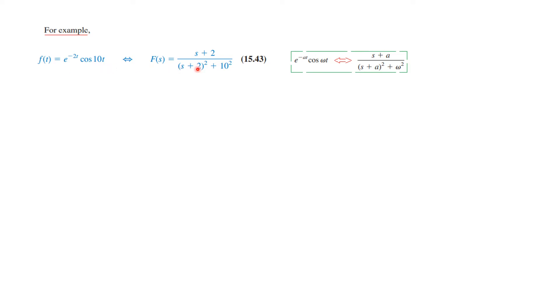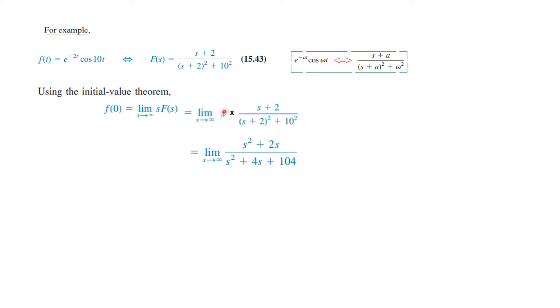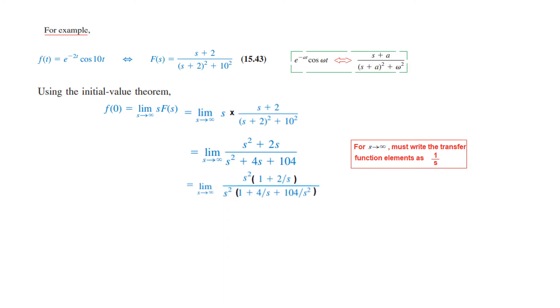Now let's take an example to understand this. We have a function and its Laplace transform from the table of Laplace transforms. Using the Initial Value Theorem, F(0) equals limit S tends to infinity of S·F(s). We multiply S with the function, so the expression becomes S squared times 2S divided by the denominator term. An important point: when taking the limit as S tends to infinity, we must write the functions in a specific form, because putting the limit directly gives infinity divided by infinity which is not possible.